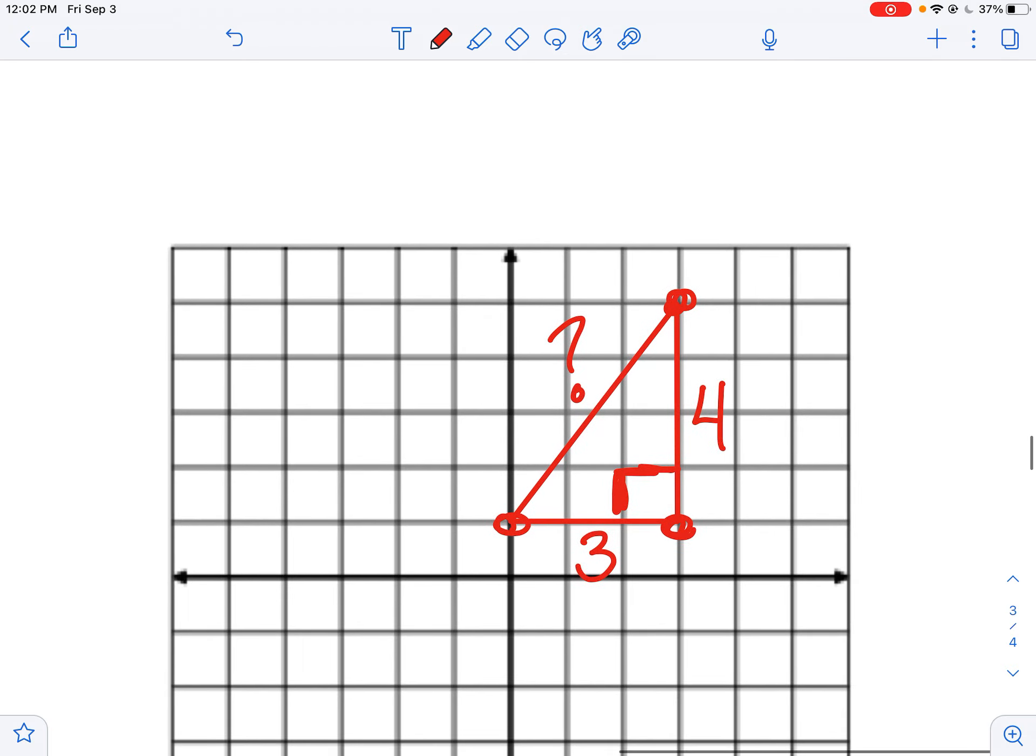So how do I find the third side of a right triangle? I can use a squared plus b squared equals c squared, or 3 squared plus 4 squared equals c squared, and that will get me 5.